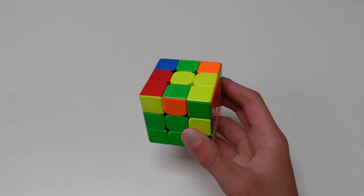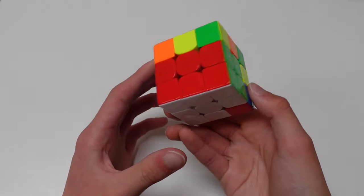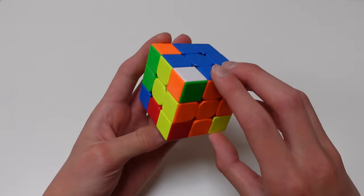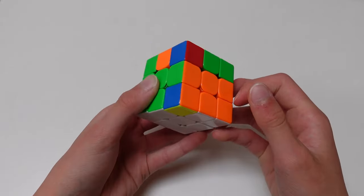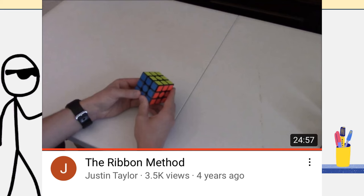Number 9, the ribbon method. This method also starts off similar to CFOP. You do the cross and three F2L pairs, but for one of the pairs, you only need to insert the edge, leaving the corner that goes with it on the top layer. Then, you do TOLS and TTLL, which is basically OLL and PLL while solving the bottom corner.